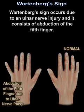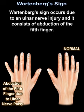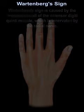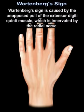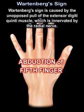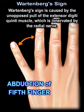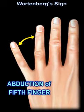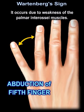It occurs due to an ulnar nerve injury, and it consists of abduction of the fifth finger. It's caused by the unopposed pull of the extensor digiti quinti, which is innervated by the radial nerve. It occurs due to weakness of the palmar interossei muscles.